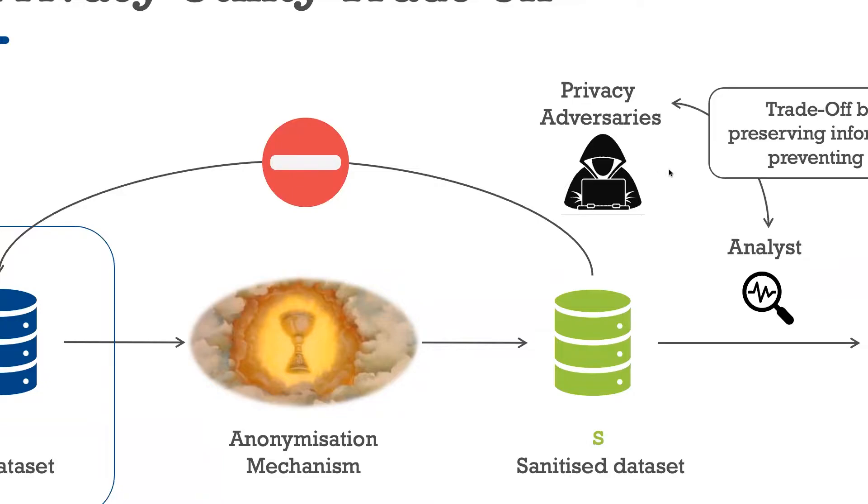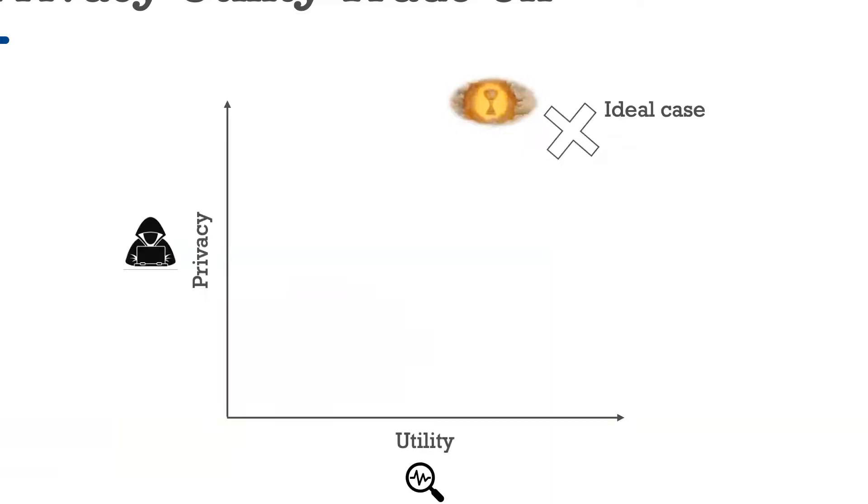Why this is a non-trivial task is because there is a tension between preserving information for analysis, but at the same time hide it from adversaries. This dilemma is what is often referred to as the privacy-utility trade-off of privacy-preserving data publishing. What we want to achieve as a data holder is to find an anonymization mechanism that maximizes this trade-off and gives us high privacy and utility at the same time.